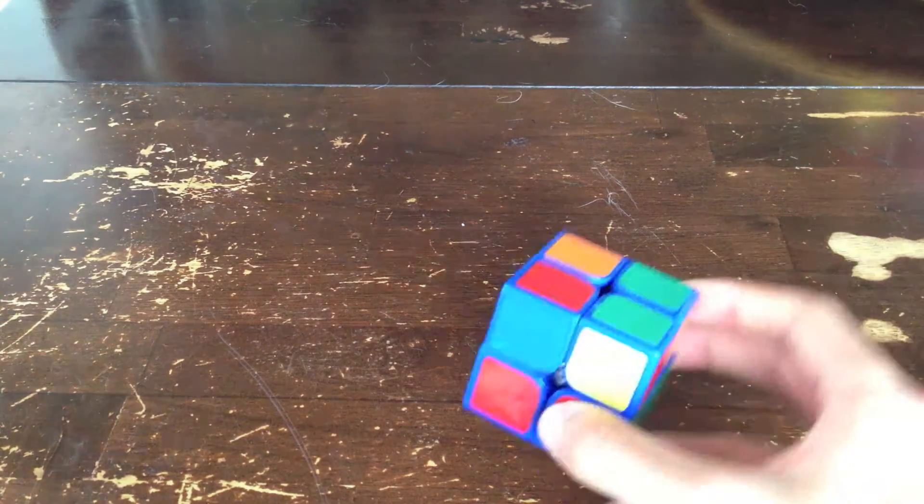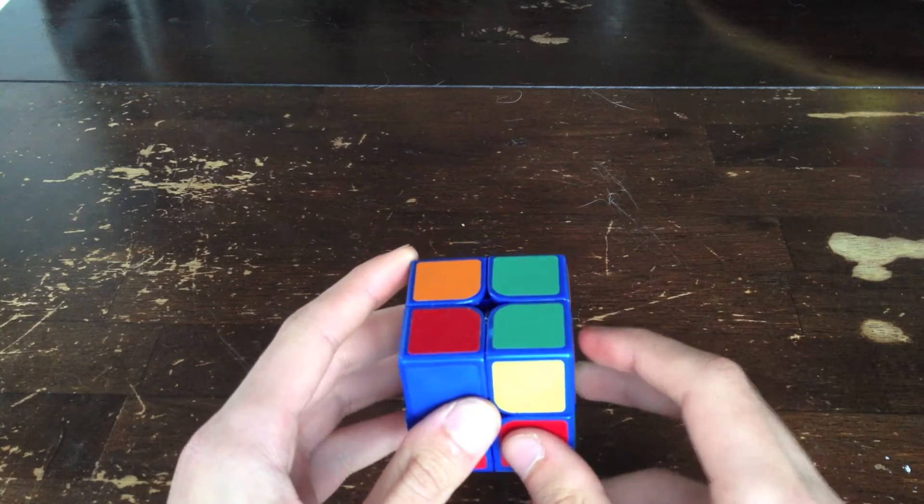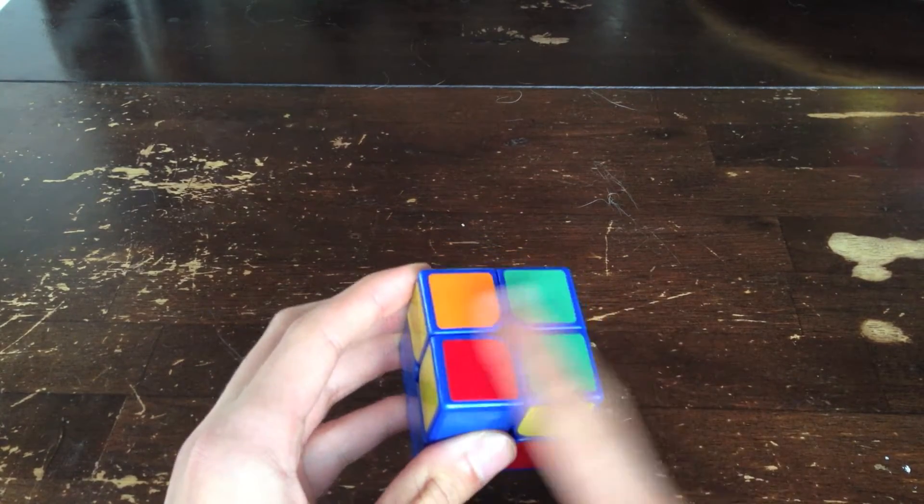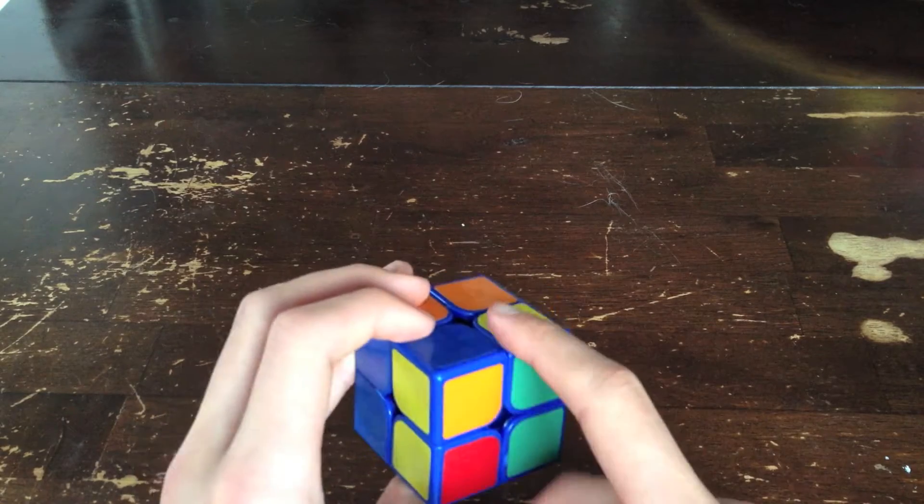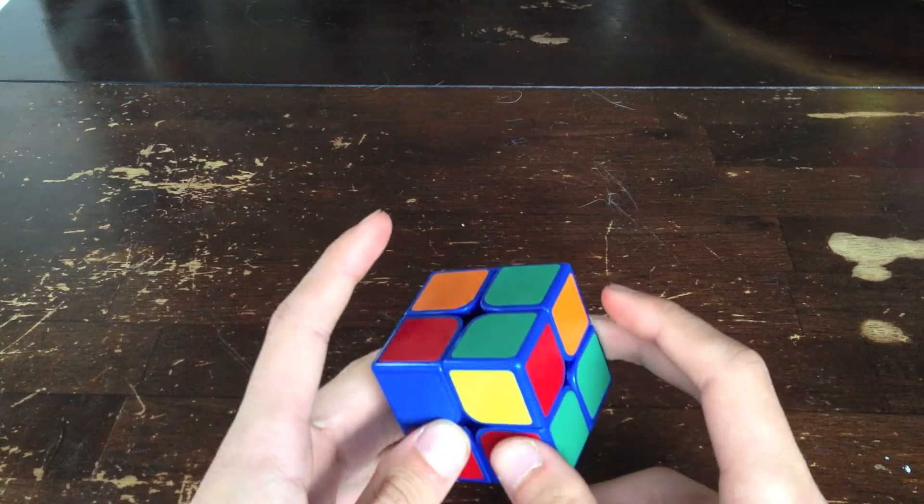This video is going to be about how I recognize and execute the Pi set for CLL. So for Pi, it's really simple on recognition. You only have to look at the top face because the yellow is all on the side, so you only have to look at the top face for the Pi set.